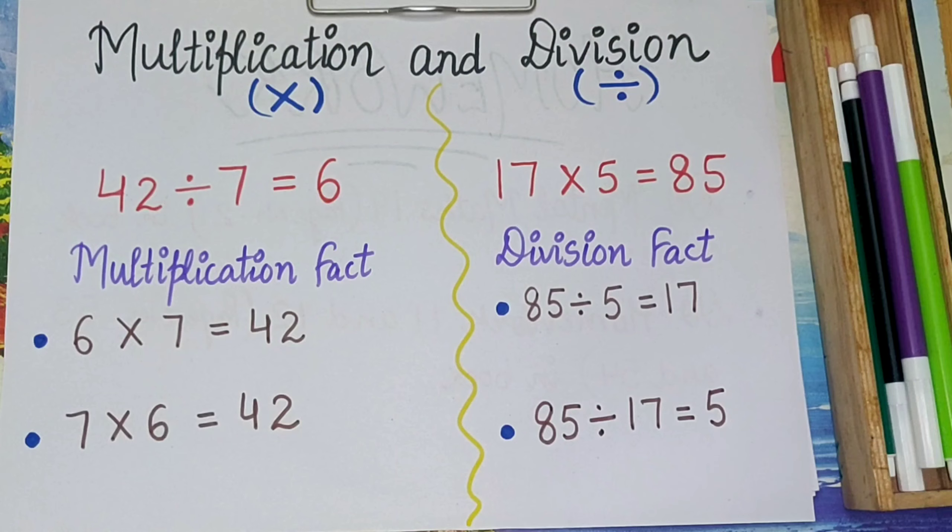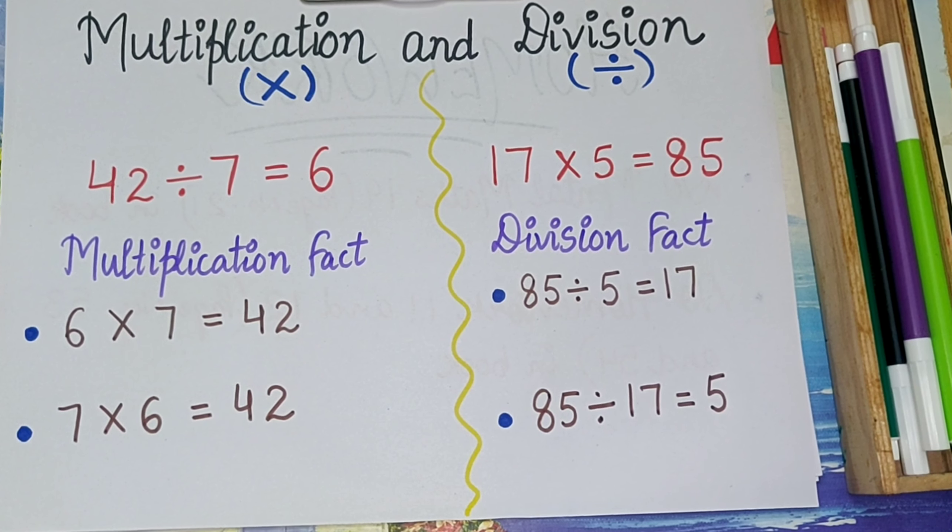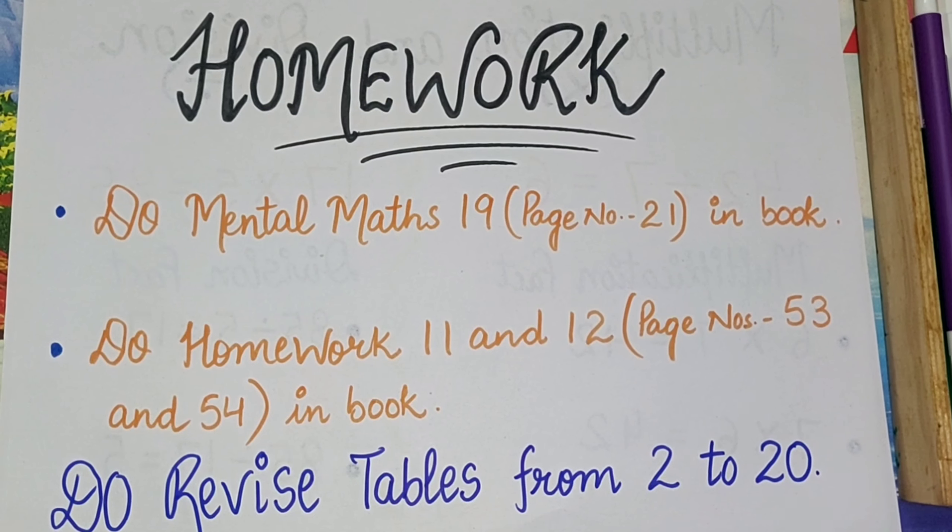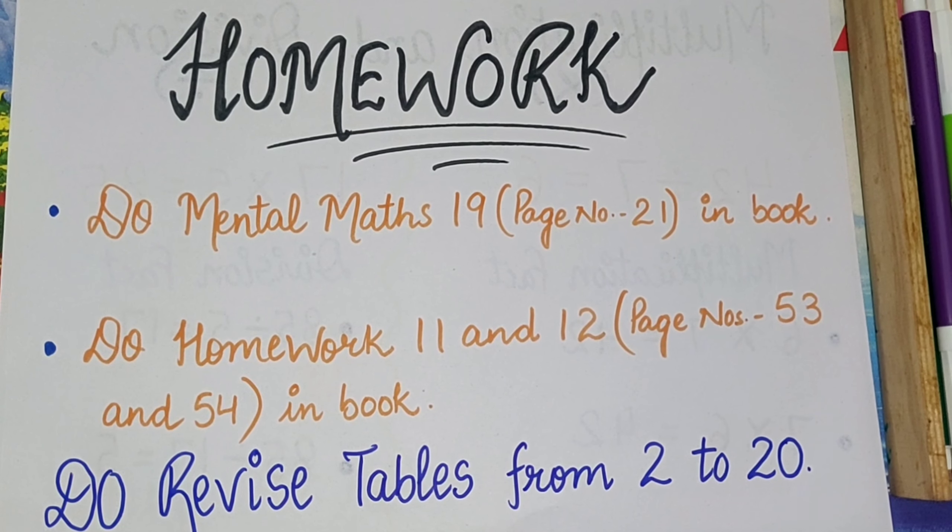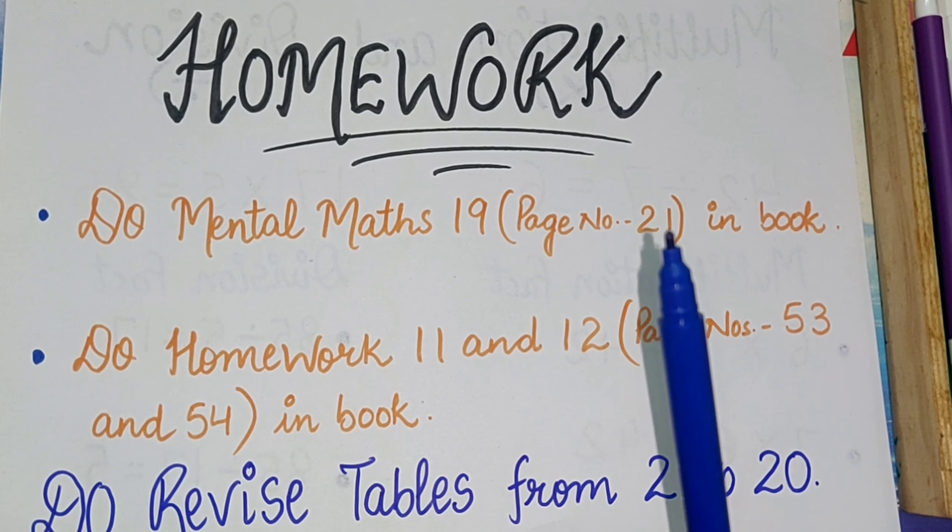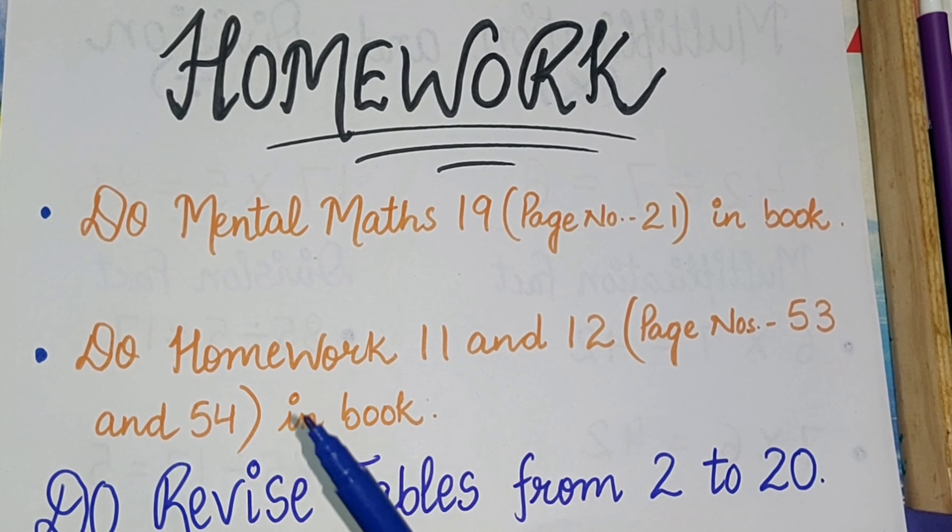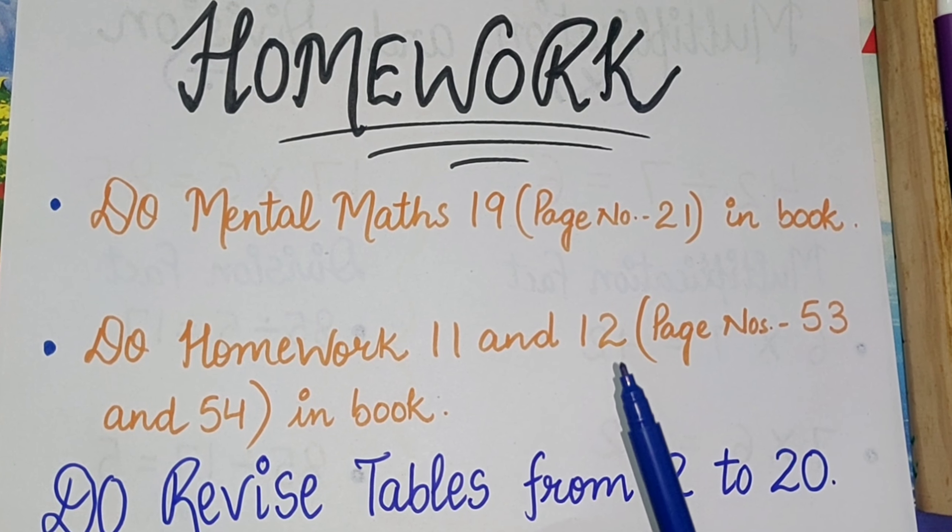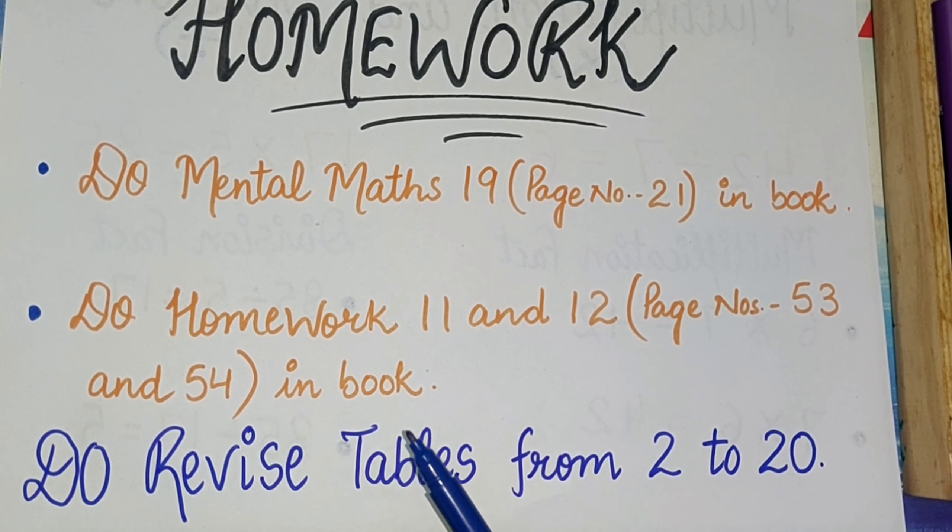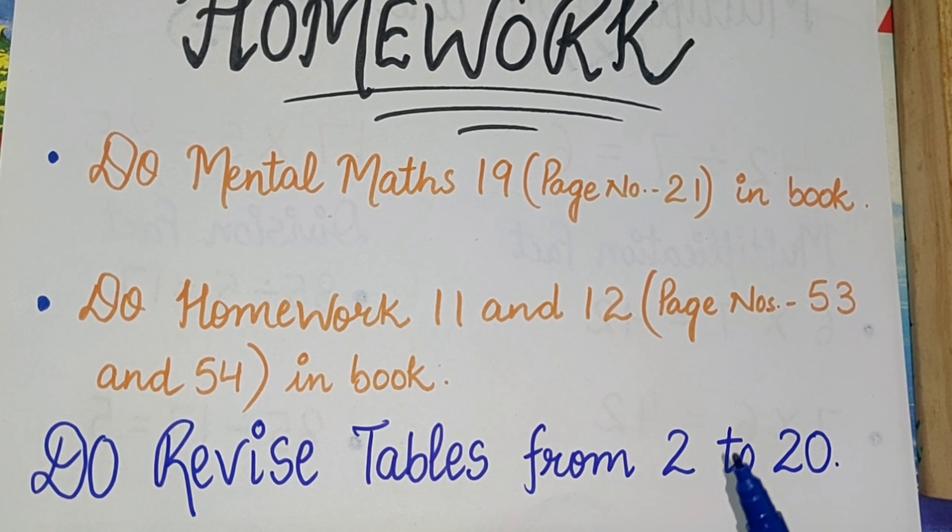So my dear kids, I believe that you must have learned how to write multiplication fact and how to write division fact. Now let's see what you have to do in your homework. You have to do Mental Maths 19 that is given on page number 21 in book, and second thing, do Homework 11 and 12 that are given on page numbers 53 and 54 in book only. And please do revise tables from 2 to 20.